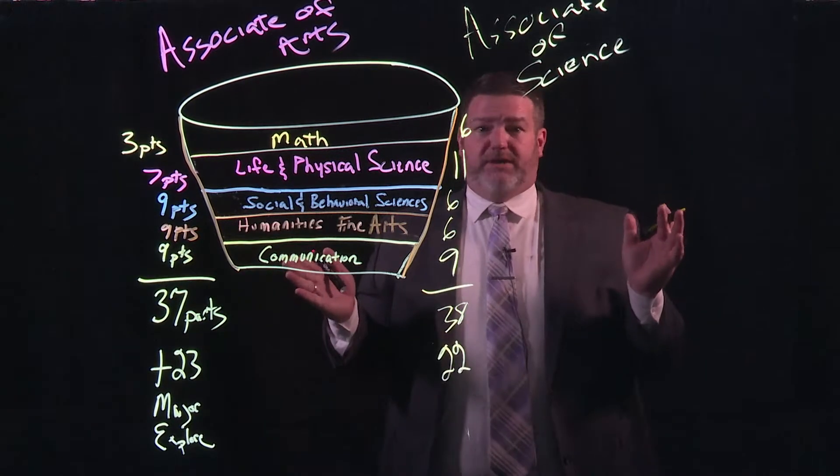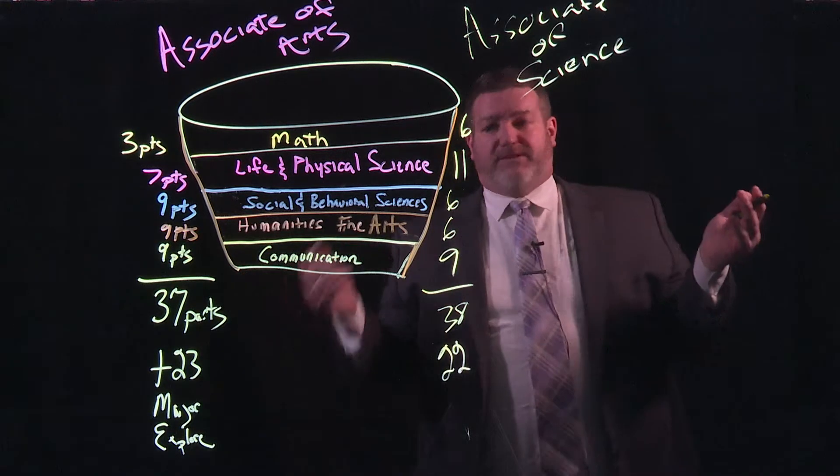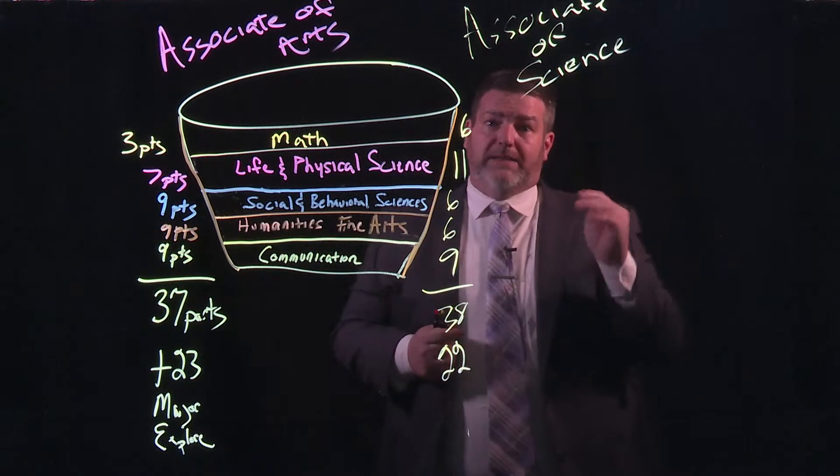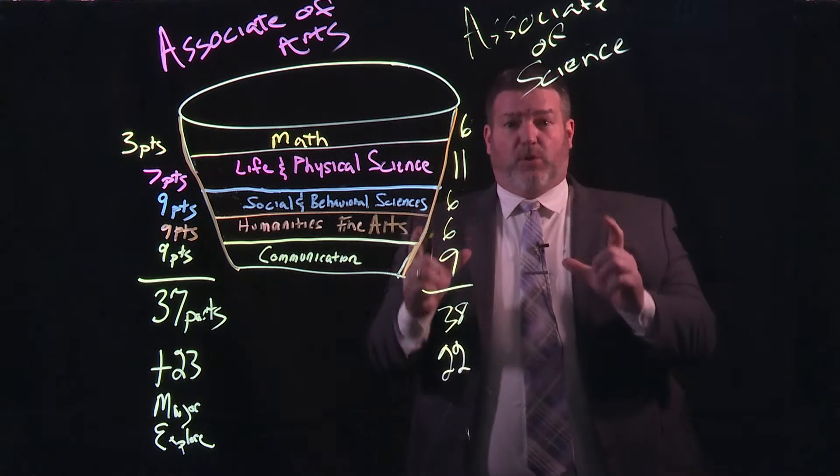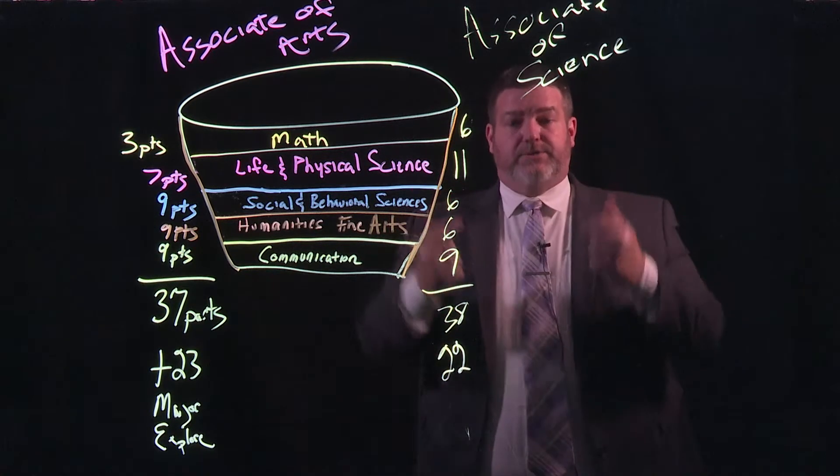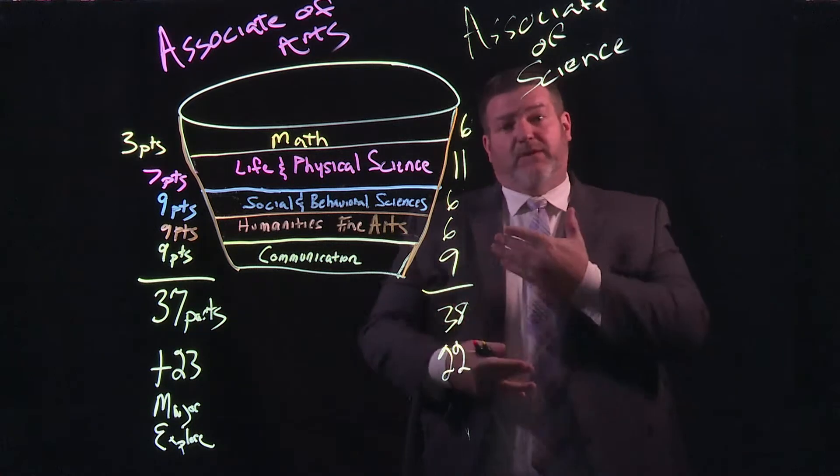So the reality is it's not much different. So why then do we have an Associate of Science degree? Well, in some of the STEM fields, that traditional model I talked about where you explore in your first year and then focus in your junior and senior year, in some of those STEM fields, that's flipped.